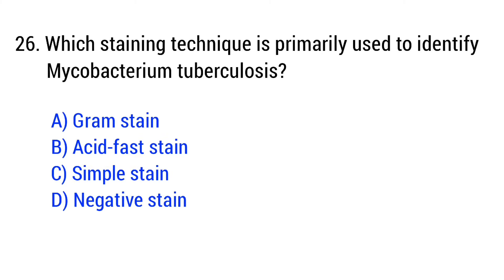Question number 26. Which staining technique is primarily used to identify Mycobacterium tuberculosis? The right answer is option B: Acid-fast stain.